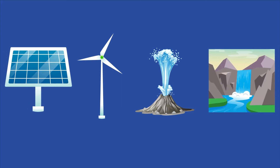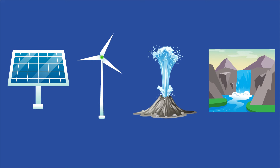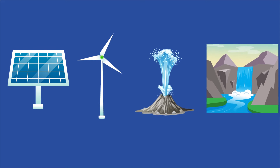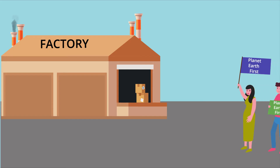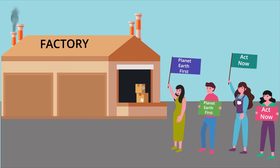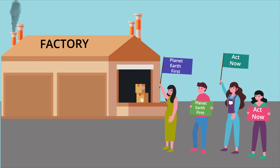Instead of using non-renewable energy sources like gas and oil, many scientists advocate for renewable energy and reducing energy usage in general. Switching to solar, wind, geothermal, and hydroelectric power are all examples of ways in which companies can reduce carbon emissions. Using less energy — such as by shutting down toxic factories — also helps the environment and saves money.